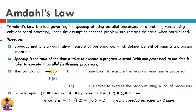We can define this with a formula. S(n) is the speed up. T1 is the time taken to execute a program in a single processor serially, and T(n) is the time taken to execute a program using n number of processes in parallel. For example, if a single processor executes a program in 1 second, and we execute with 2 processes, the time becomes 1/2 = 0.5 seconds. With 3 processes it is 1/3, with 4 it is 1/4, and with n processes it is 1/n.